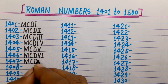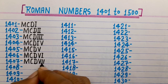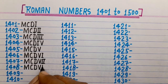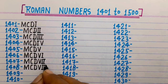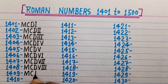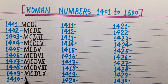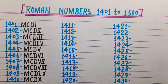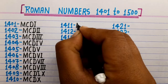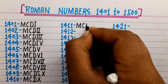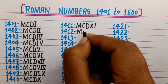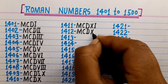1407 is MCDVII. 1408 is MCDVIII. 1409 is MCDIX. 1410 is MCDX. 1411 is MCDXI. 1412 is MCDXII.